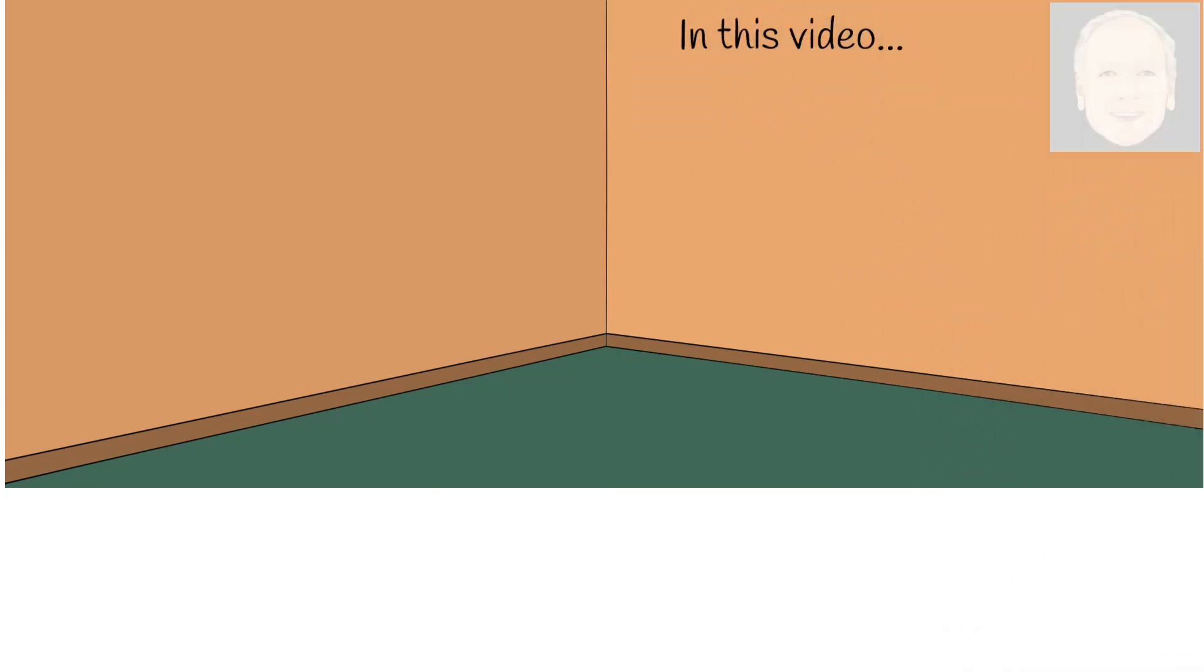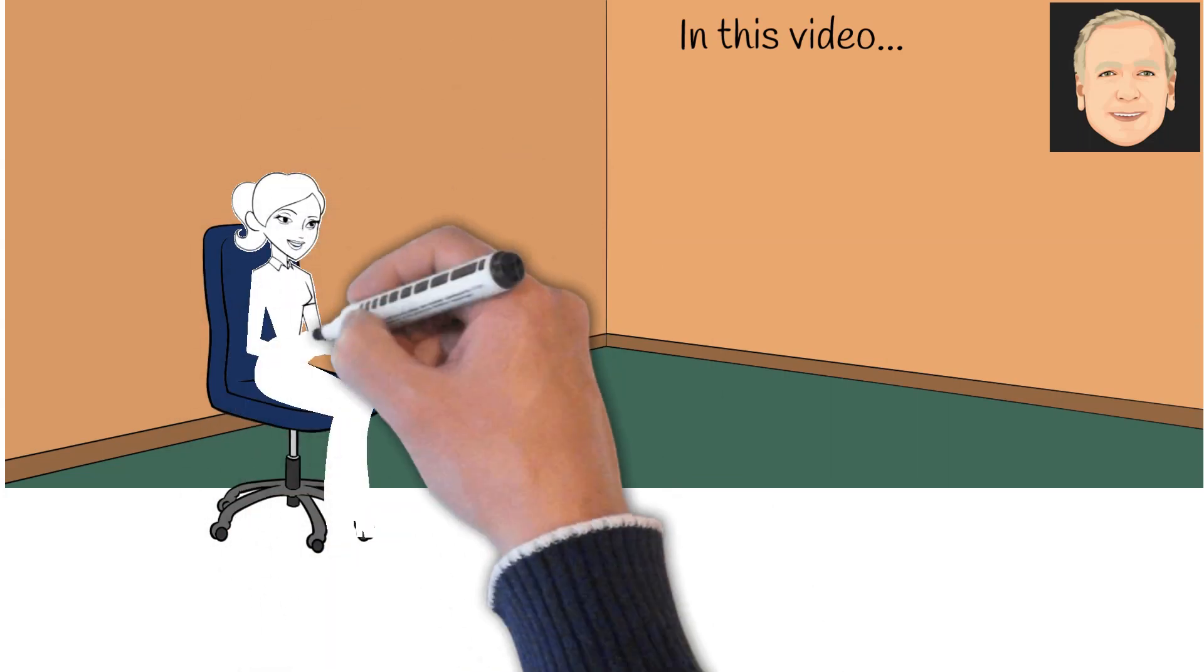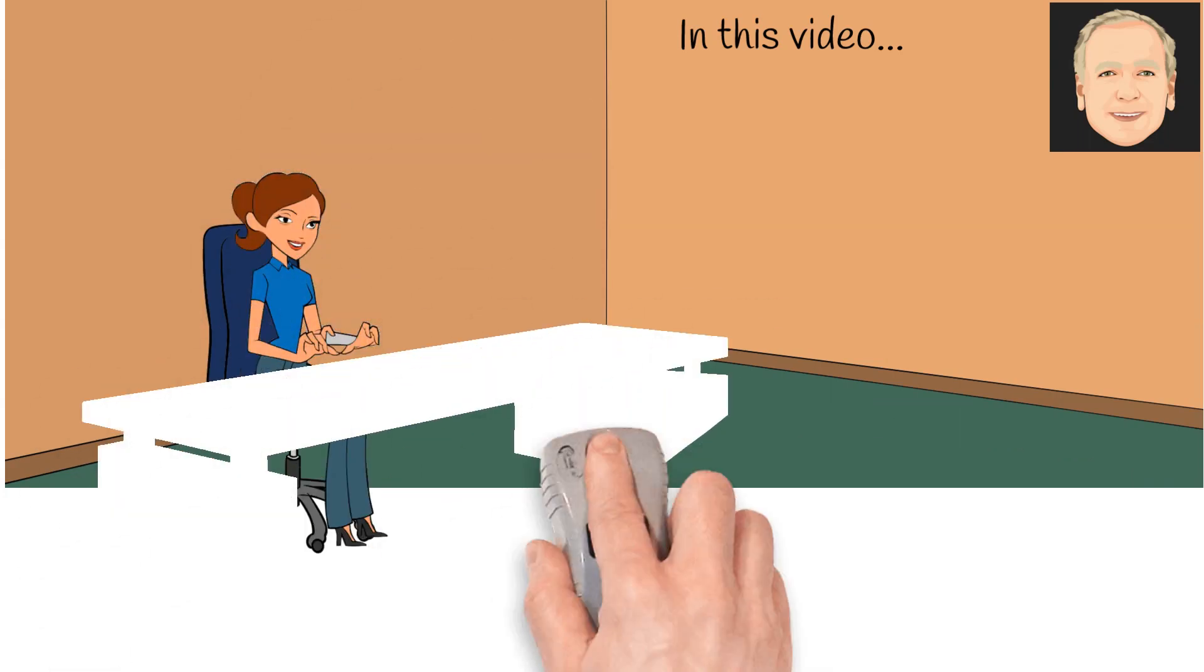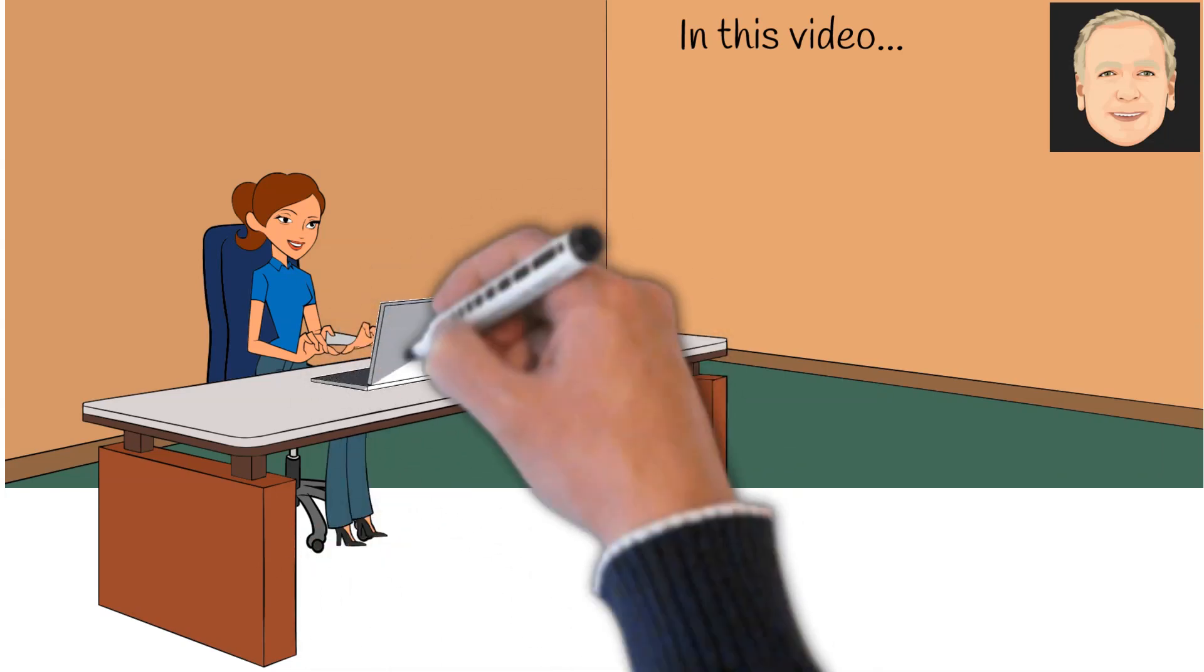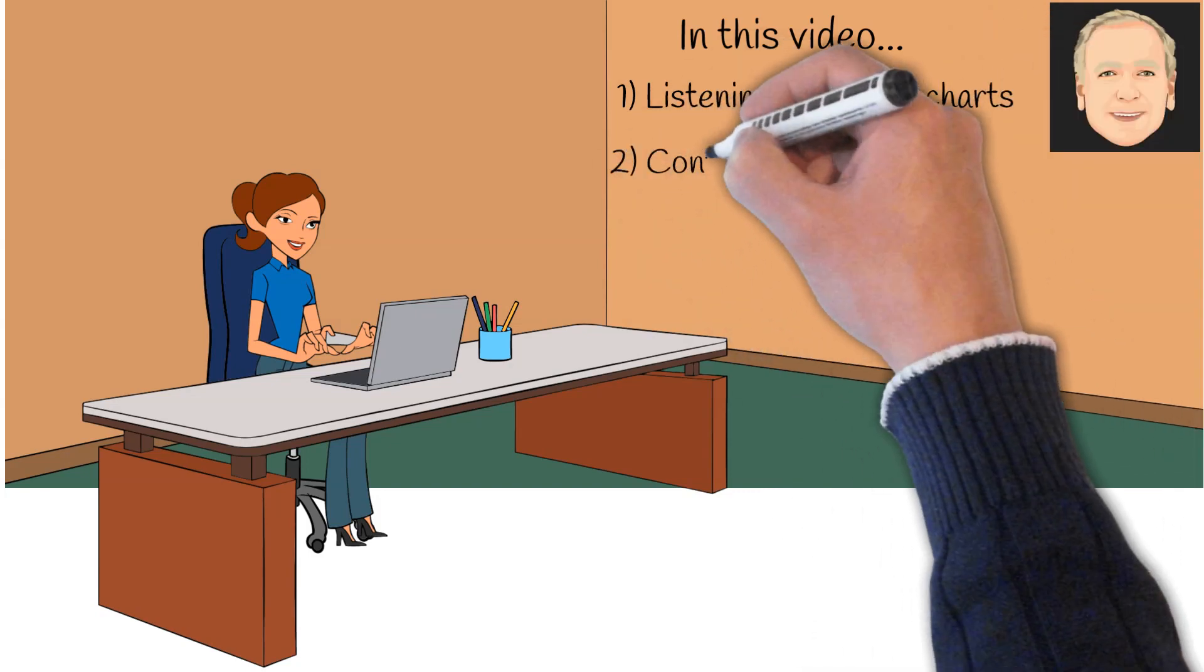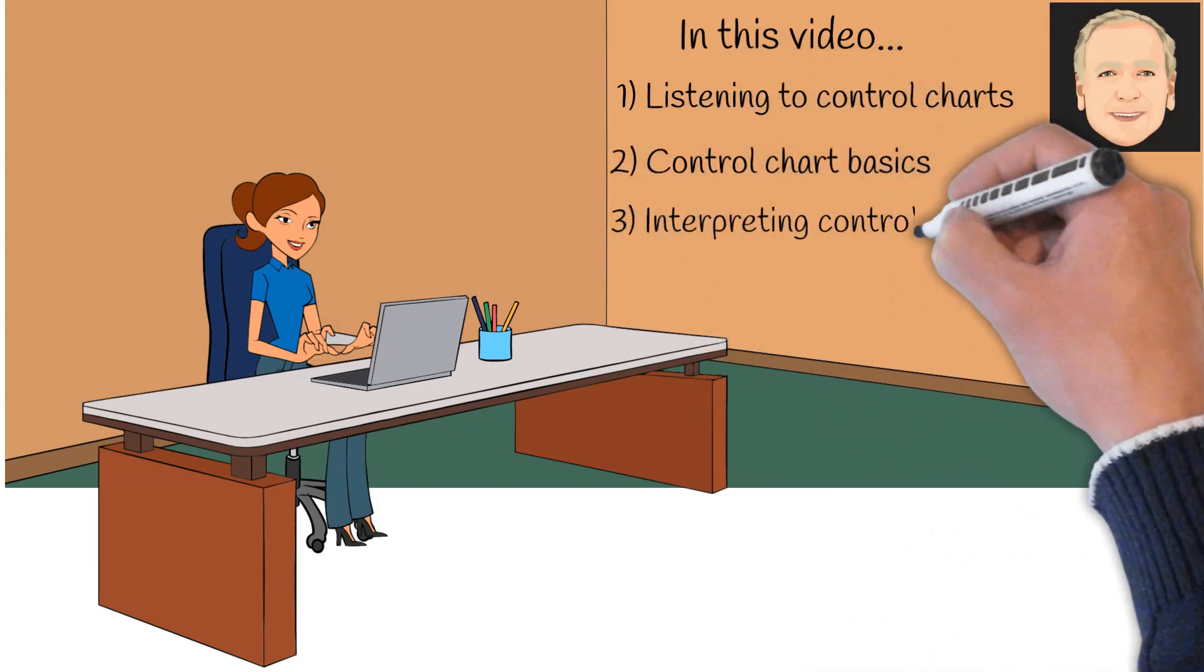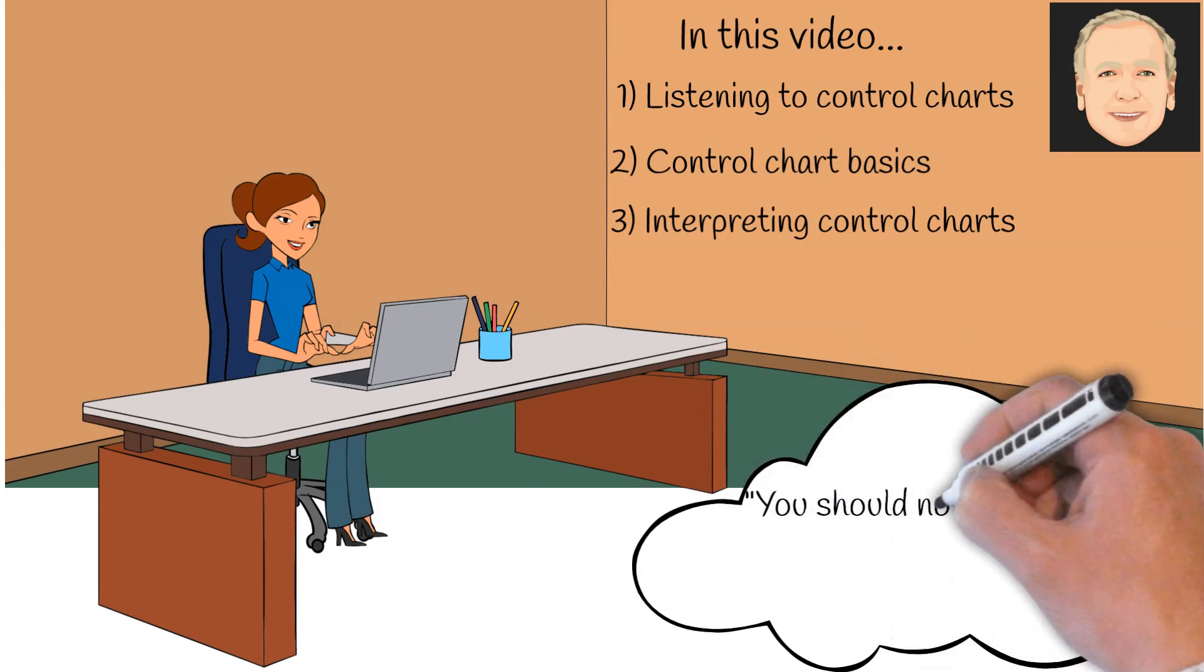In this video, we're going to be taking a look at how you interpret a control chart. Because if you interpret a control chart correctly, the process will tell you if everything's okay or if you have a problem in your process. We're going to look at the different rules for interpreting a control chart. That's the way you listen to a control chart, and we'll talk a little bit about the basics in interpreting control charts.